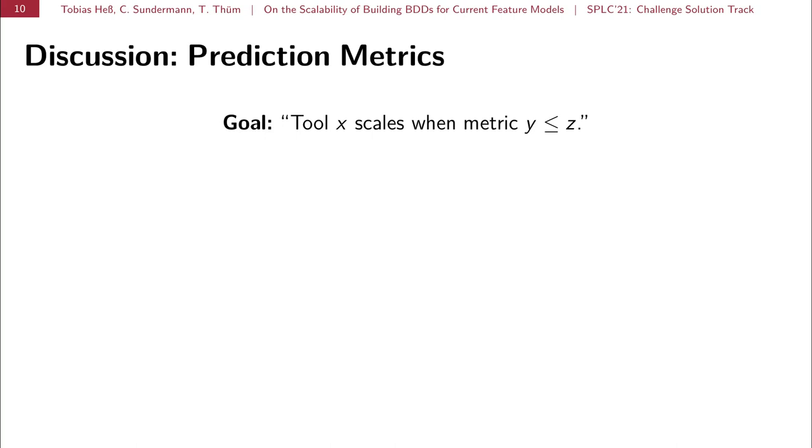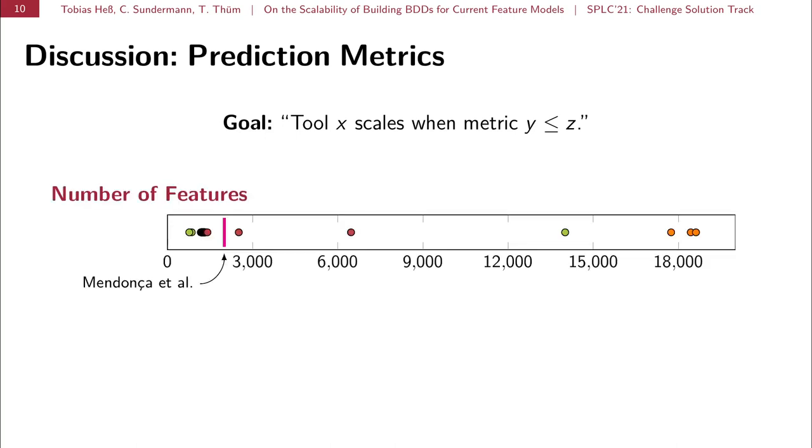Another point we want to look into was to get a prediction. We want a statement, well, Tool X scales when metric Y is less or equal than Z. And in earlier research, we find such statements as we said earlier. There is a statement from Mendonca et al. that BDD scales for feature models with less or equal than 2,000 features. So, we looked into this and we denoted the threshold of Mendonca et al. with a magenta line in our plot.